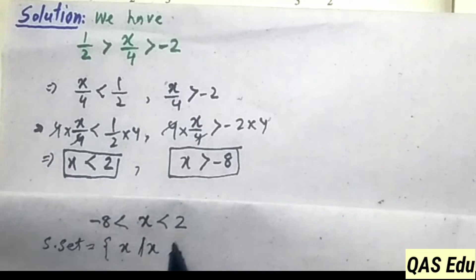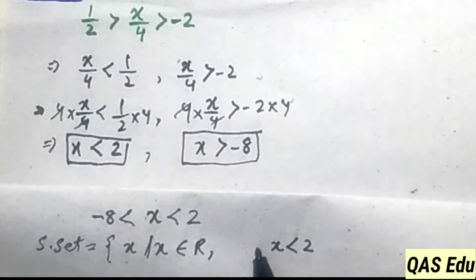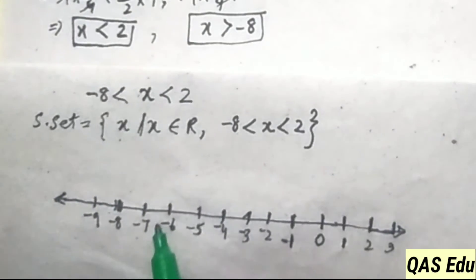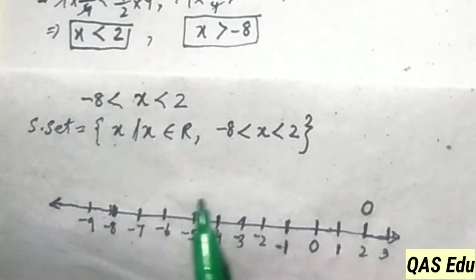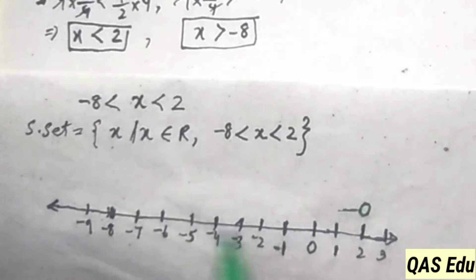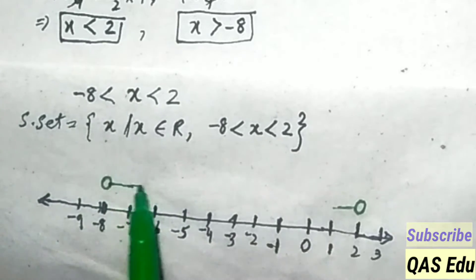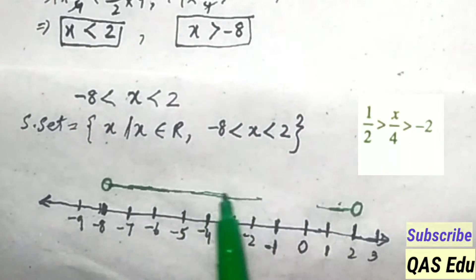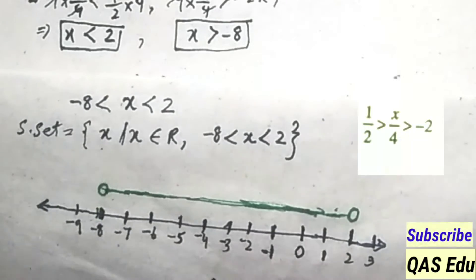The solution set is where x belongs to real numbers, with the restriction that x is less than 2 and greater than minus 8. On the number line, at 2 we draw an empty circle since 2 is not included, and at minus 8 we draw an empty circle. We draw the line segment between minus 8 and 2, representing the solution set of the inequality on the number line.